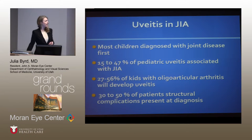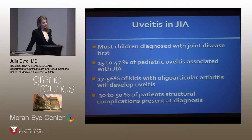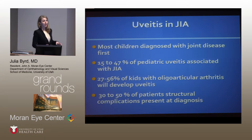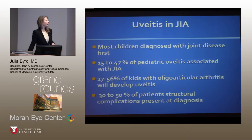An overview of some important points about JIA and uveitis associated with JIA: most children diagnosed with joint disease have that diagnosis first, then have ocular complications secondary to that. 15 to 47 percent of pediatric uveitis is associated with JIA, and this disease accounts for a lot of the pediatric patients we'll see with uveitis. 27 to 56 percent of kids with oligoarticular arthritis will develop uveitis. And 30 to 50 percent of patients have structural ocular complications already at the time of diagnosis of uveitis, which portends a poor prognosis.